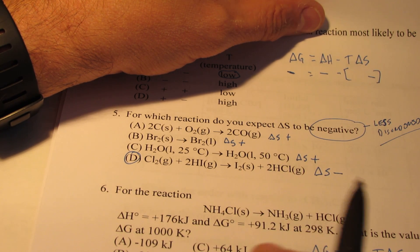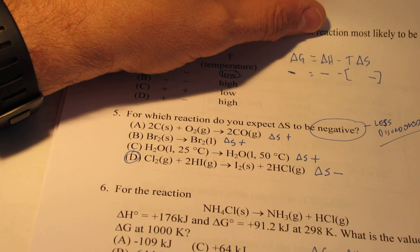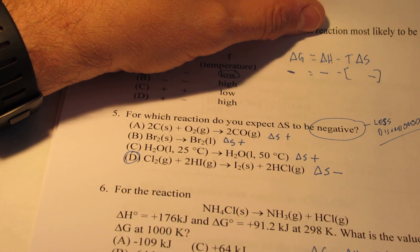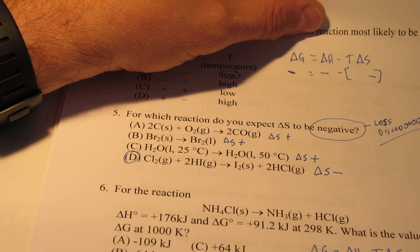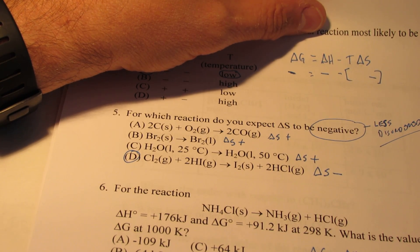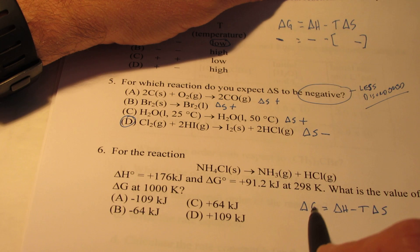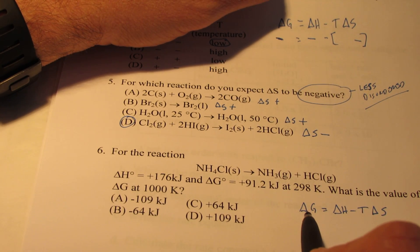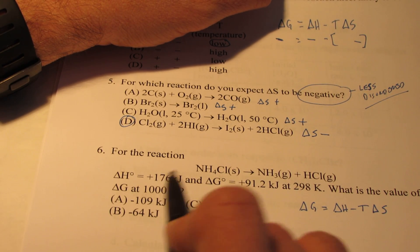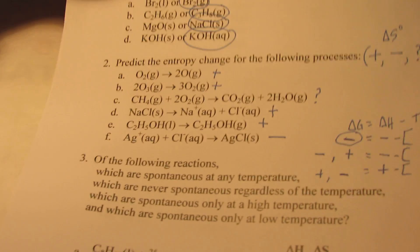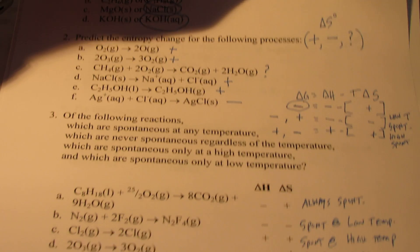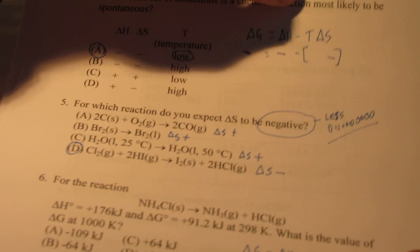So what we first need to do is solve for the entropy change of this reaction. The entropy change of a reaction is pretty much temperature independent. That's not true for Delta G. Delta G we know is temperature dependent. In fact in this case we have two positives. Delta H and Delta G are both positive. We don't know Delta S, but let's take a look and see.